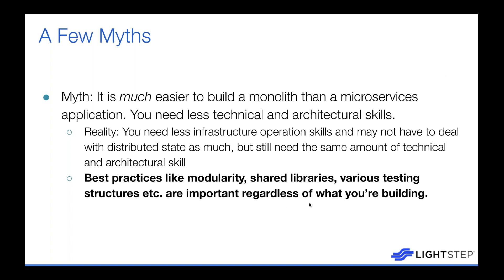These best practices protect us from losing track of our dependency structure. Regardless of whether we have a monolith or a microservice, we really need to understand the dependencies between all interacting pieces of our code and write maintainable code, or we'll end up in a bad spot. Especially if you're building a monolith and planning to move to microservices afterwards, having modularity and testing structures makes splitting out dependencies into microservices much easier.